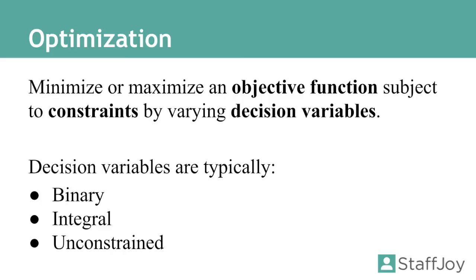When you're defining these decision variables, you're looking mainly at three different types: they're either going to be binary, integers, or unconstrained floats.